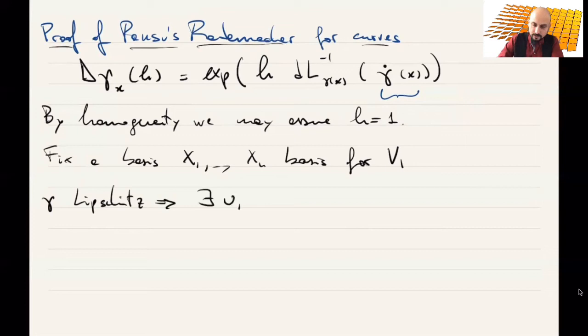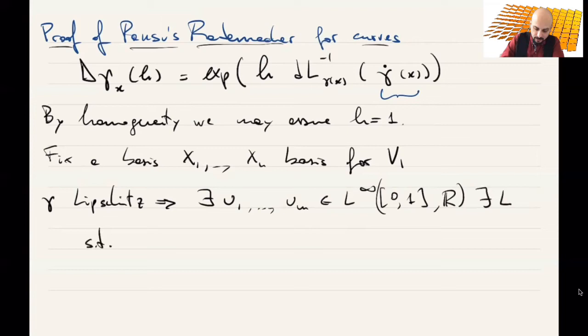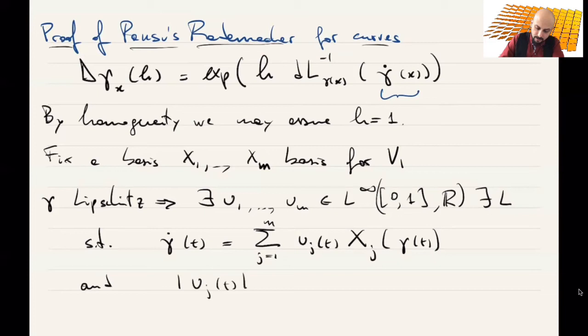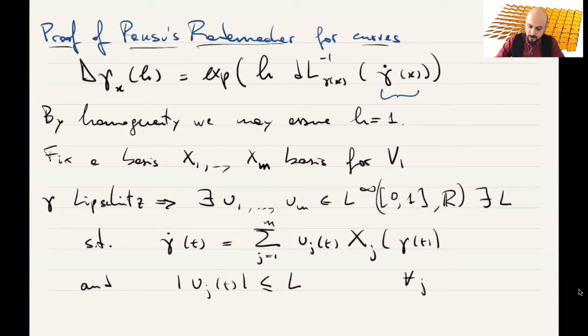The fact that γ is Lipschitz implies there are control functions u₁, …, uₘ — bounded functions defined on [0,1] — where L is the Lipschitz constant, such that the derivative equals the sum of uⱼ(t) · Xⱼ at the point γ(t). These are the controls of γ, and the controls are almost everywhere bounded by L. We can replace them to be always bounded, so for all j from 1 to m and all t in [0,1].